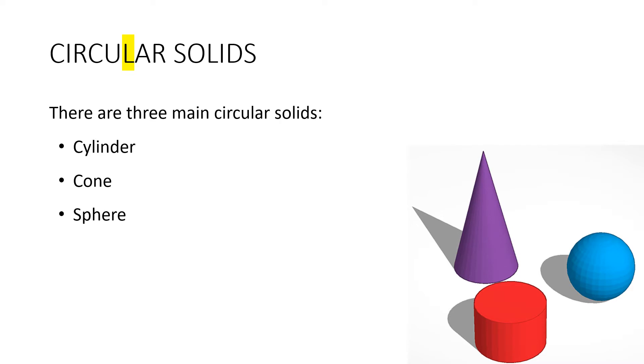There are three main circular solids: cylinder, cone and sphere. We will look at others in the next video, like hemisphere and truncated cone, but for the moment we're just going to look at these three.